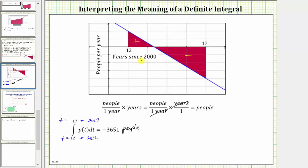And therefore, the interpretation is between 2012 and 2017, the population has decreased, because of the negative, by a total of 3,651 people. Let's write this as a complete sentence.